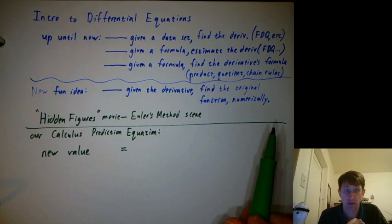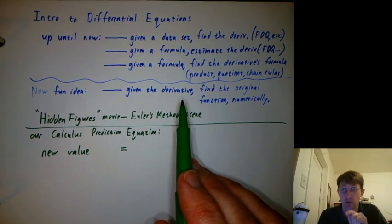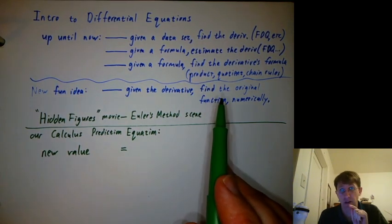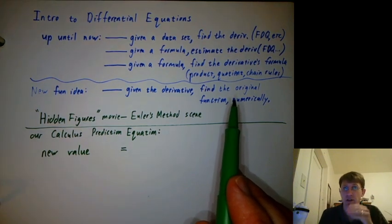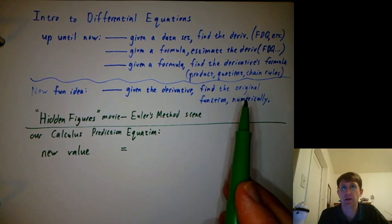Today, we're going to think backwards and say, what if we know the derivative? Can we find some numeric version of the original function? Probably not a formula for it, but at least some data points about it.